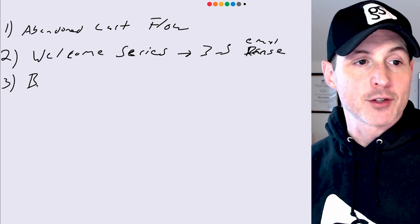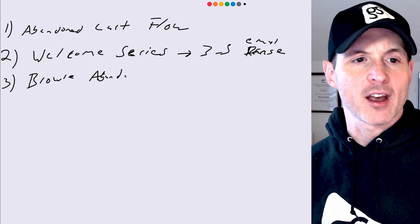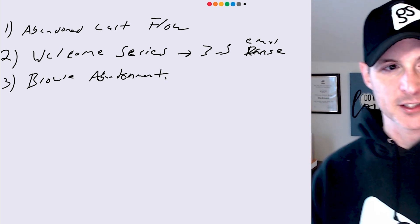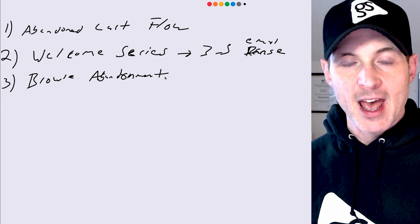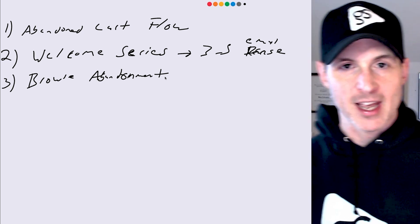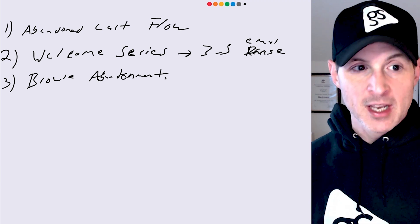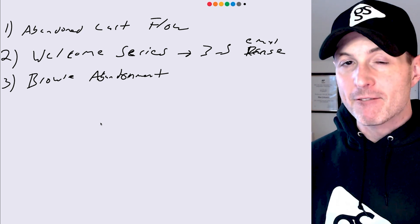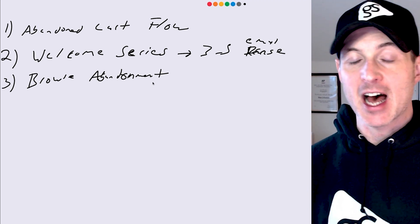Next is the browse abandonment series — a series that a lot of people don't think of. This plays off the welcome series: once you capture someone's email via the pop-up, Klaviyo knows what pages they visited. It knows if they visited a product page. So if someone opts into the welcome series on your homepage and then goes to a product page, they can be put into a very specific flow just for people who visited a product page but didn't buy.